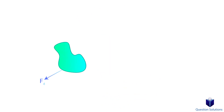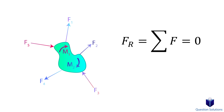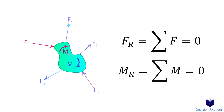Now imagine we have an object like this, and there are a bunch of forces and moments affecting it. If we sum up all the forces and moments — meaning we find the resultant force and the couple moment — and they're both equal to zero, then that object is in equilibrium.